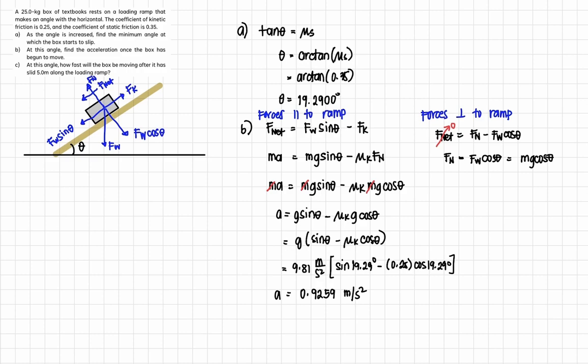Now in letter C, we are looking for the velocity. After it has moved 5 meters, what is the velocity now? At this angle, how fast will the box be moving after it has slid 5 meters along the ramp?